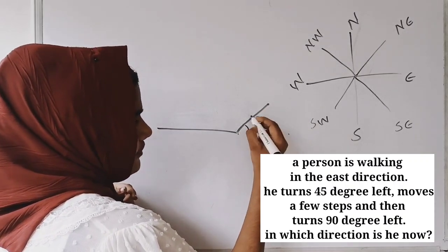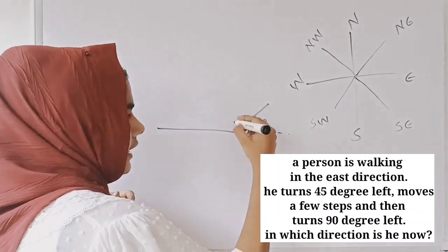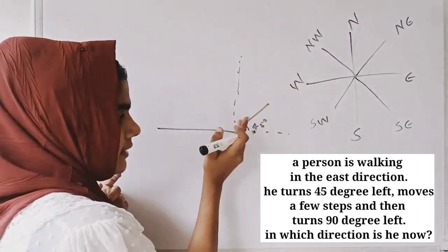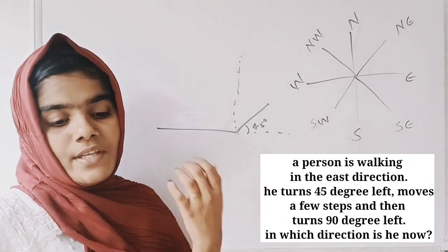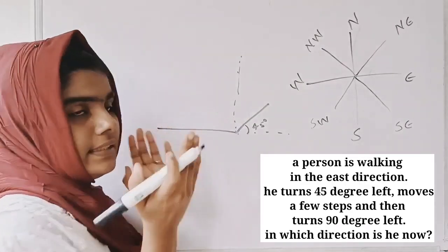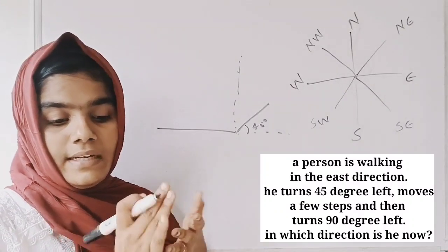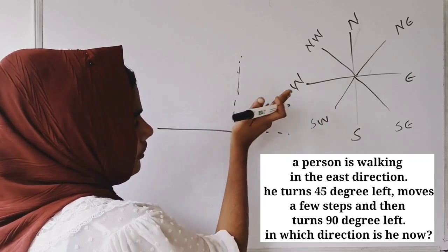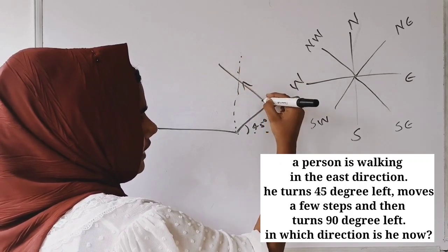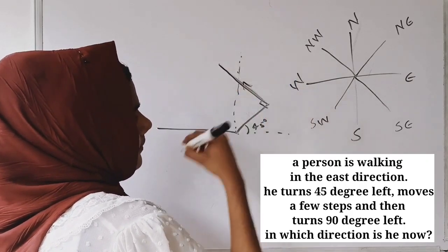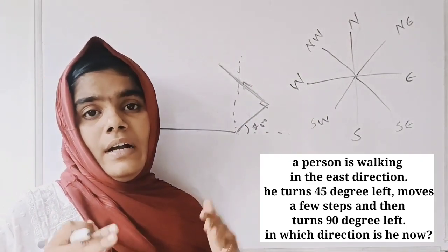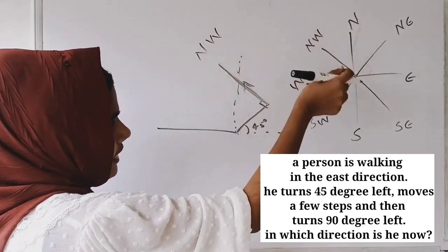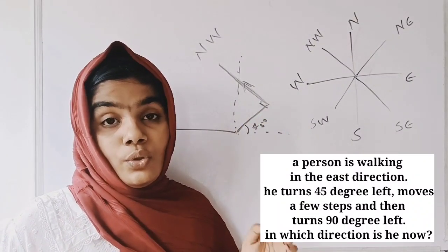If he turns left 45 degrees, then turns left again 90 degrees, we need to find the resulting direction. Starting from East, turning 45 degrees left gives North-East. Then turning 90 degrees left gives North-West direction. So the answer is North-West direction.